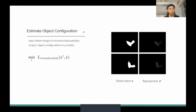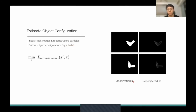To perform closed-loop robot manipulation tasks, we re-estimate the object's configuration given updated image observations. Given the input observed masking images and the reconstructed particles, we fix the reconstructed particle variables and only vary the object configuration parameters: position parameters x, y, z and orientation parameter theta. By minimizing the distance between the reprojected images x-prime and observation images x, we can re-find the best estimation of the position and orientation parameters.